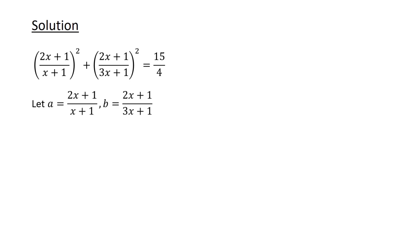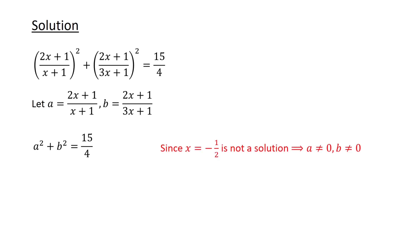First, let's make the substitution a equals 2x plus 1 over x plus 1, and b equals 2x plus 1 over 3x plus 1. Thus, we have a squared plus b squared is equal to 15 over 4. Given that minus one-half is not a solution, it follows that a and b are non-zero, so we can take their reciprocals.